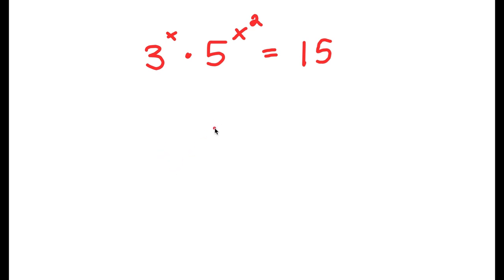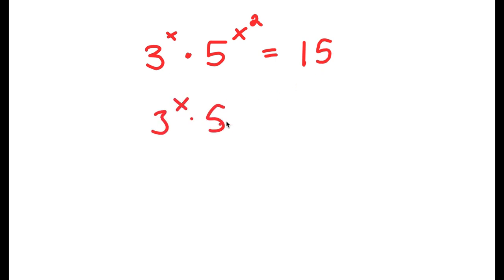In this problem, I have 3 to the power of x times 5 to the power of x squared is equal to 15. To solve this, I'm going to first start by rewriting 15 as 3 times 5. So now I have 3 to the power of x times 5 to the power of x squared is equal to 3 times 5.